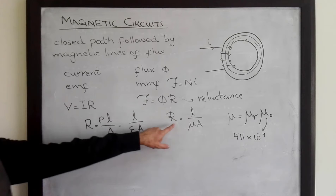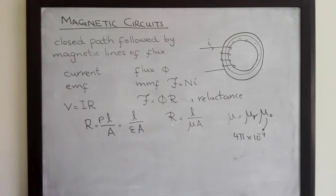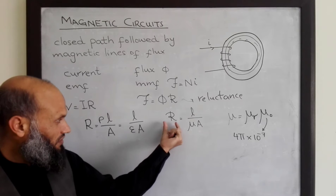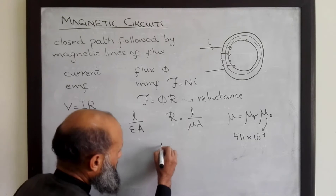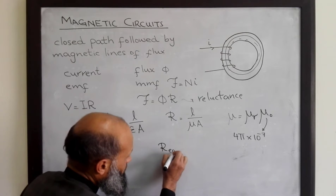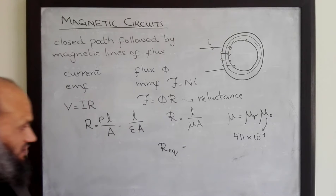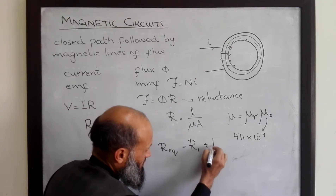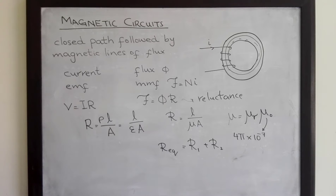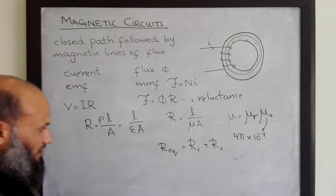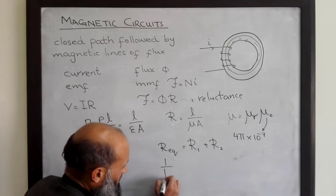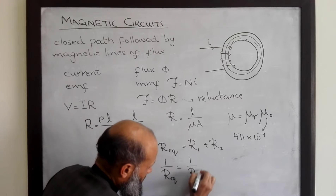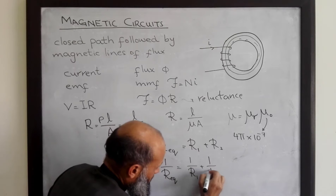Reluctance follows the same rules as resistance. If there are two reluctances connected in series, the equivalent reluctance is simply the sum: R_equivalent equals R1 plus R2. And if two reluctances are connected in parallel, their equivalent reluctance is given by 1 over R1 plus 1 over R2.